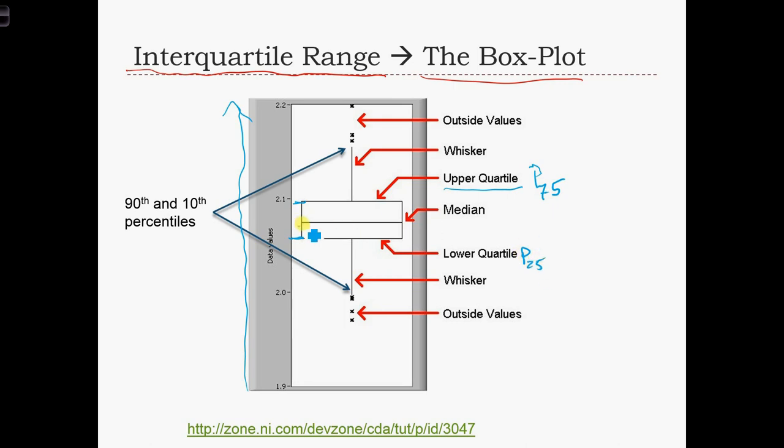We put a line through the median value in the distribution, and we're going to extend a straight line up until we find the 90th percentile, and a straight line down to the 10th percentile.